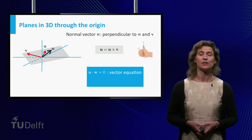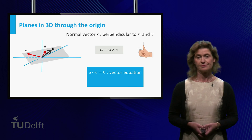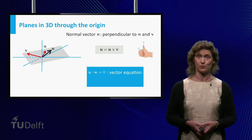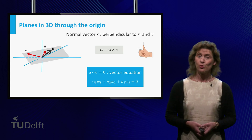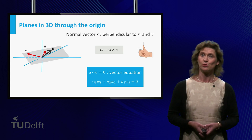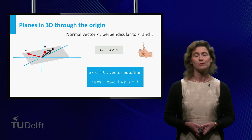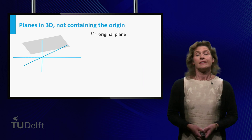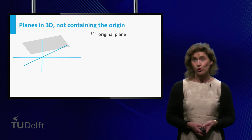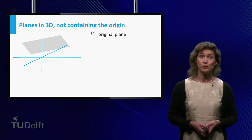Where you computed the vector n by taking the cross-product of the two given vectors in the plane. This is called the vector equation of the plane. If you write this out in terms of the components of the vectors, you get n1 times w1 plus n2 times w2 plus n3 times w3 equals 0.